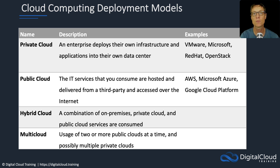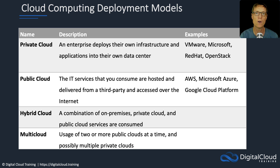With a private cloud, an enterprise will deploy their own infrastructure and applications into their own data center — much like what we saw in the traditional IT operating model. The difference is they might layer some software on top to make it into an actual cloud with those characteristics of a cloud computing service. Some of the software you might use includes VMware, Microsoft, Red Hat, or OpenStack.